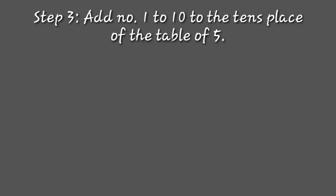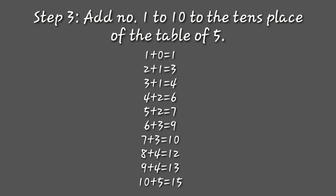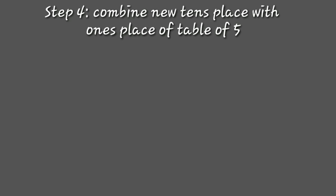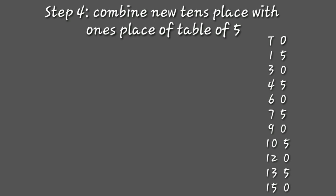In step 3, add the counting 1 to 10 with the tens place of the table of 5: 1 plus 0 equals 1, 2 plus 1 equals 3, 3 plus 1 equals 4, 4 plus 2 equals 6, 5 plus 2 equals 7, 6 plus 3 equals 9, 7 plus 3 equals 10, 8 plus 4 equals 12, 9 plus 4 equals 13, and 10 plus 5 equals 15. This is the new tens place. Finally, combine this new tens place with the older ones place from the table of 5, and you get: 15, 30, 45, 60, 75, 90, 105, 120, 135, and 150 — this is the table of 15.